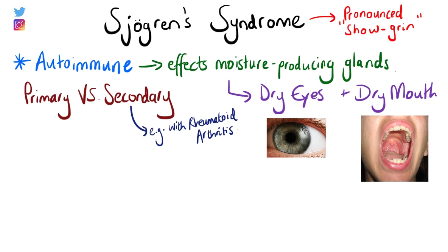The cause of Sjogren's syndrome is largely unknown, but it's been speculated that it's due to an environmental cause which triggers the syndrome in those who are genetically susceptible. Certain sialotropic viruses — meaning viruses which target the salivary glands — have been known to trigger Sjogren's syndrome, an example being hepatitis C.